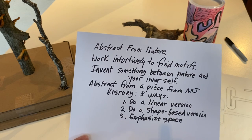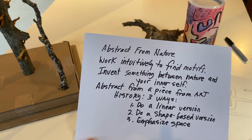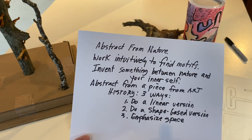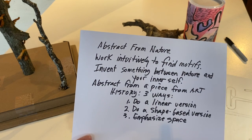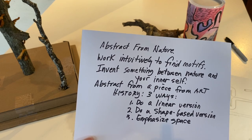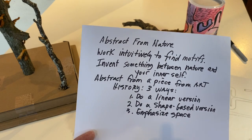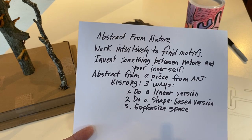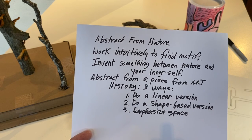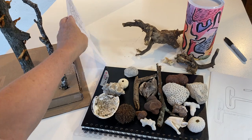Try abstracting it by doing a linear version — something that emphasizes line in that piece. Then do a drawing where you emphasize shape: take the shape relationships you see in that same work of art and do a shape version of it. And lastly, do a version of it that emphasizes space. So there are a few thoughts about that.